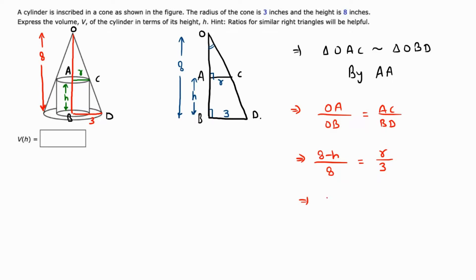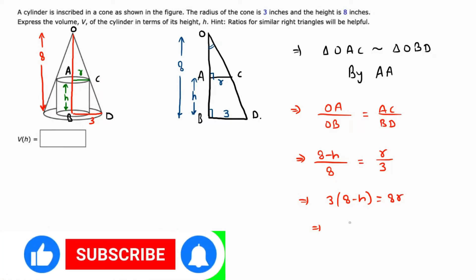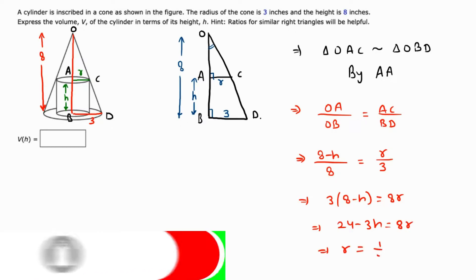3(8 - h) = 8r, which gives 24 - 3h = 8r. Therefore, r = (24 - 3h)/8. Now we need to find the volume of the cylinder in terms of height.